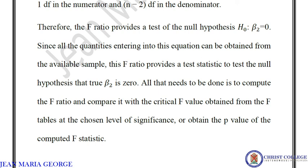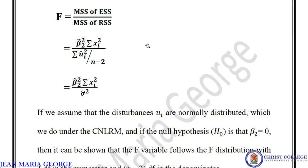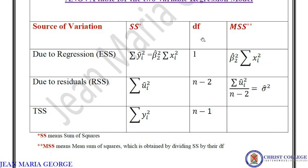This is the analysis of variance approach for regression analysis. The ANOVA table organizes all components — ESS, RSS, degrees of freedom, and mean sum of squares — and from it we can find the mean sum of squares needed for the F test. This completes the explanation of regression analysis from the viewpoint of analysis of variance. Hope you all understood. Thank you.